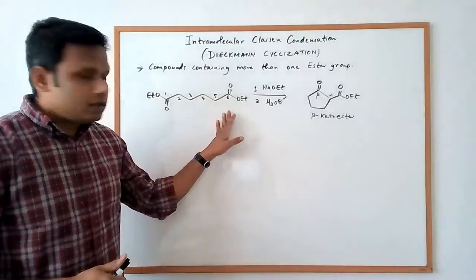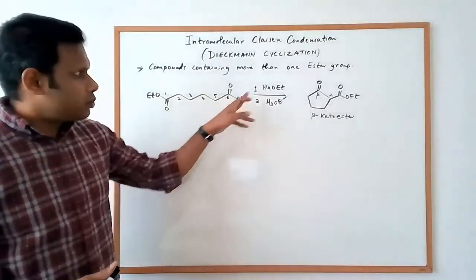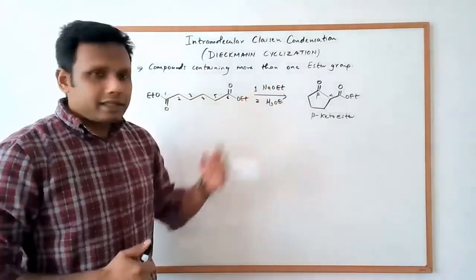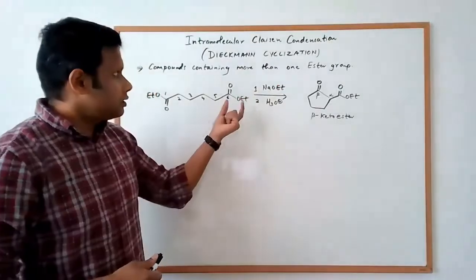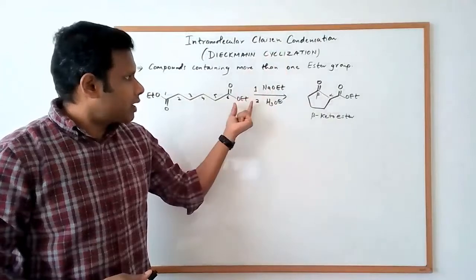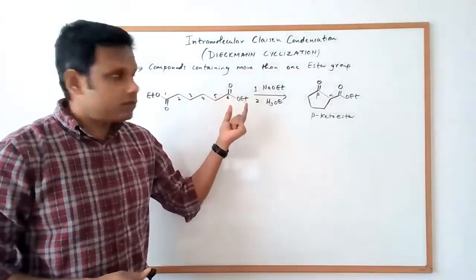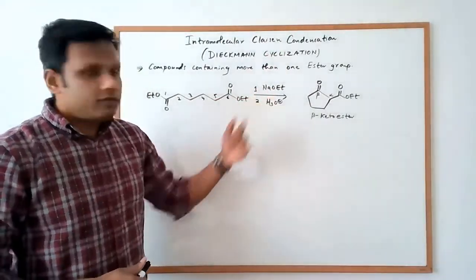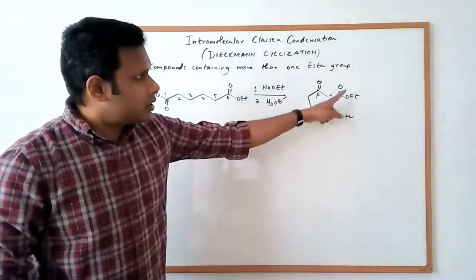When you react this diester with sodium ethoxide as a base, and again, since this is related to the Claisen condensation, we are using a base that matches with the alcohol portion of the diester. And followed by an acidic workup, you get a compound.